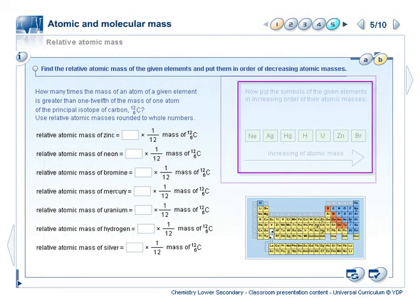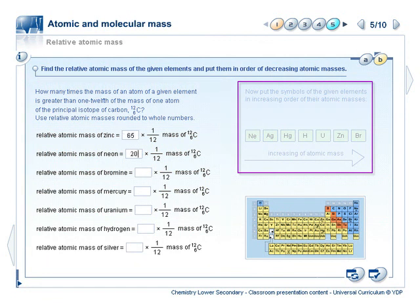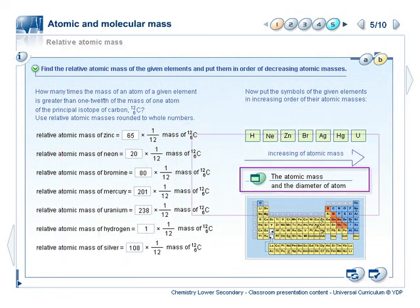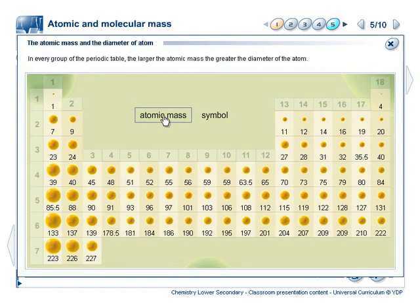Some of the activities are graded such that only when the first part has been solved can the student gain access to the second part. Most of the activities include a bonus for providing answers that are all correct. In this example, an interactive periodic table is the bonus.